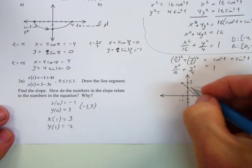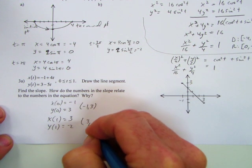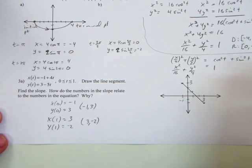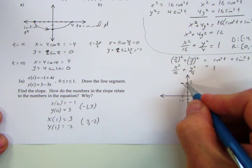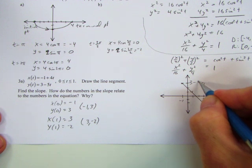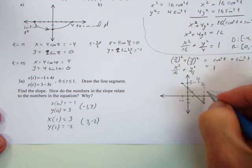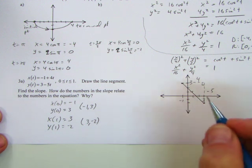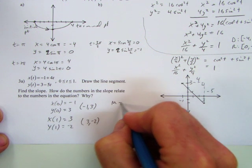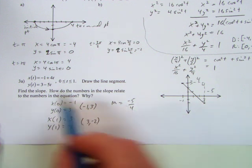Now, it doesn't actually tell us to indicate the direction but we are going here. This is our initial point and our final point would be 3 comma negative 2. Find the slope of this. Well, let's take a look at these numbers. This number here would be what? From negative 1 to 3, this is 4 and then 3 down, this would be negative 5. So, we have the slope is negative 5 fourths. How do the numbers in the slope relate to the numbers in the equation? Take a close look at that. Where do you see negative 5 and 4 in the original equation?